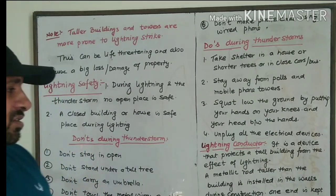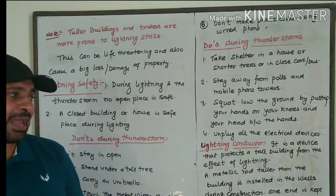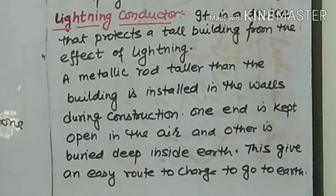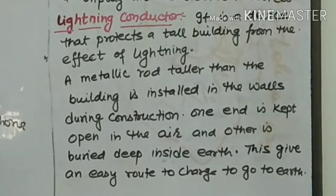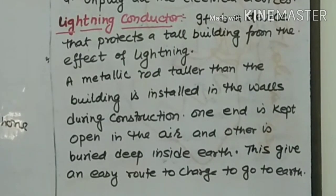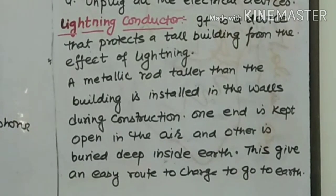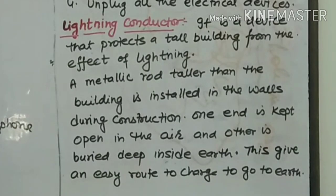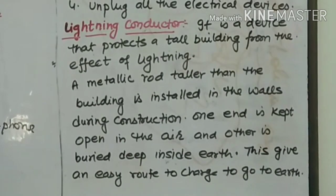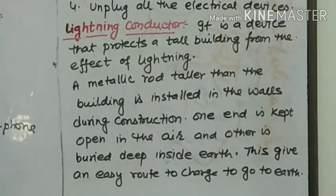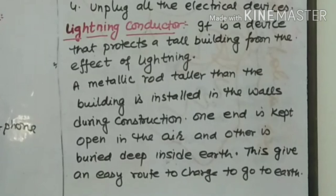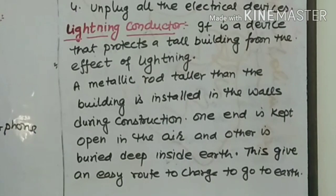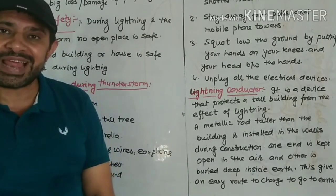At last, use a lightning conductor. A lightning conductor is a device that protects a tall building or tower from the effect of lightning. Basically, a lightning conductor is a long metal rod the height of the building. One end is kept in the open air and the other end is very deep in the earth. This conductor provides an easy route for the charge accumulated on the roof or upper part of the building to be transferred safely to the ground.